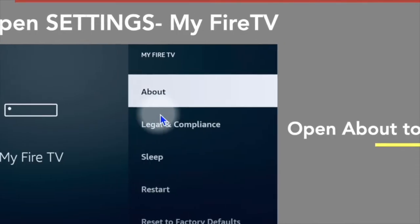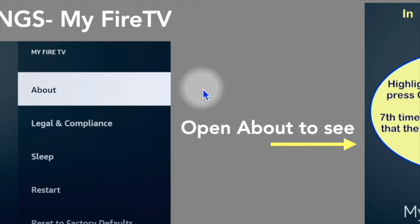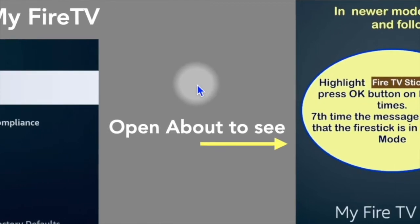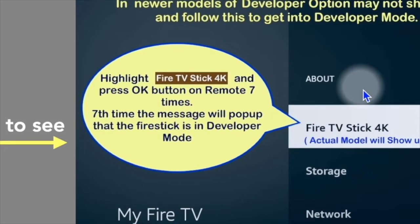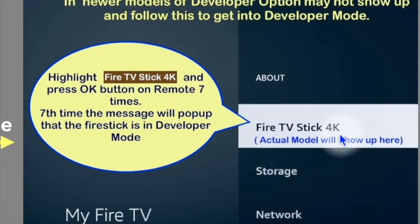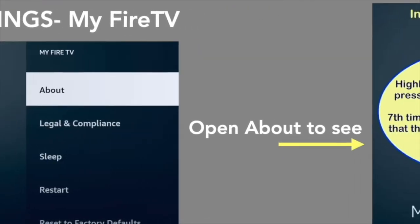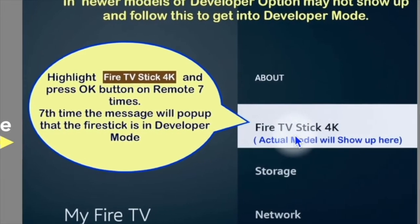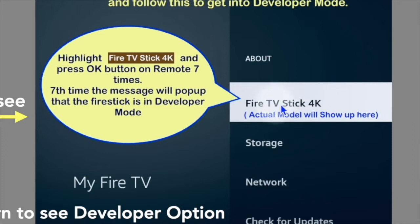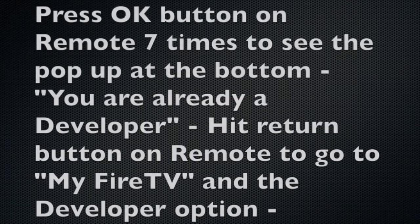On the new model: open Settings, open My Fire TV, and open the About tab at the top. The About page will display your Fire TV model at the top — select it and press OK on the remote seven times.